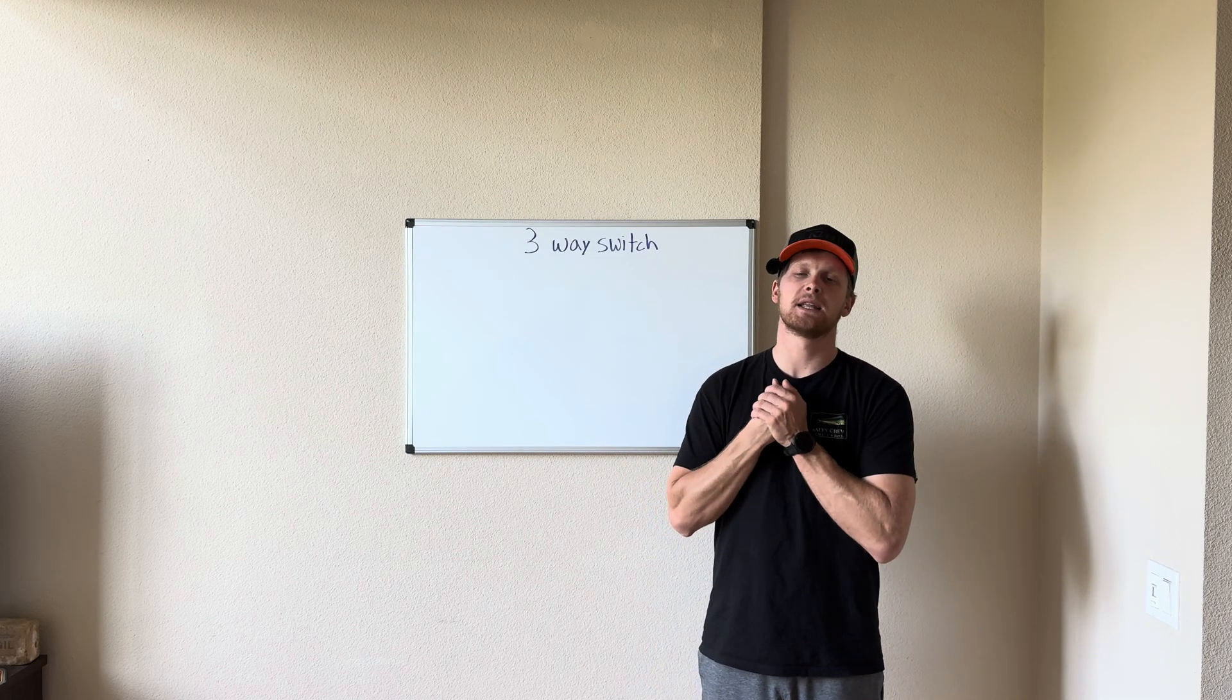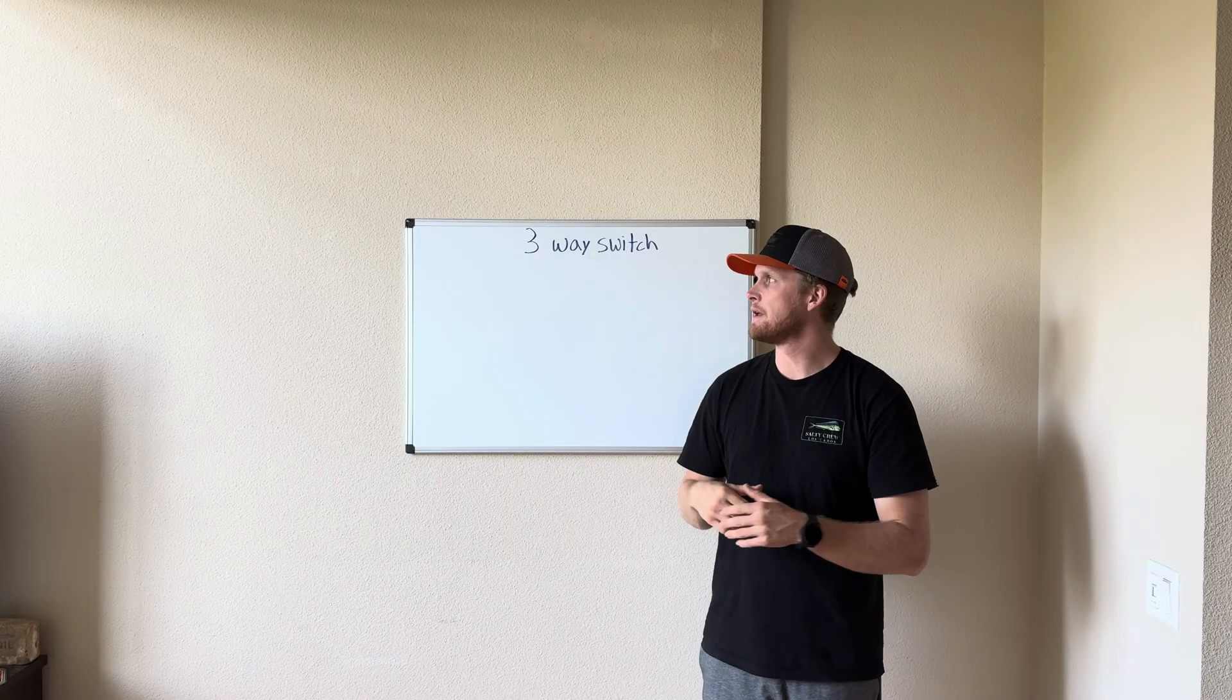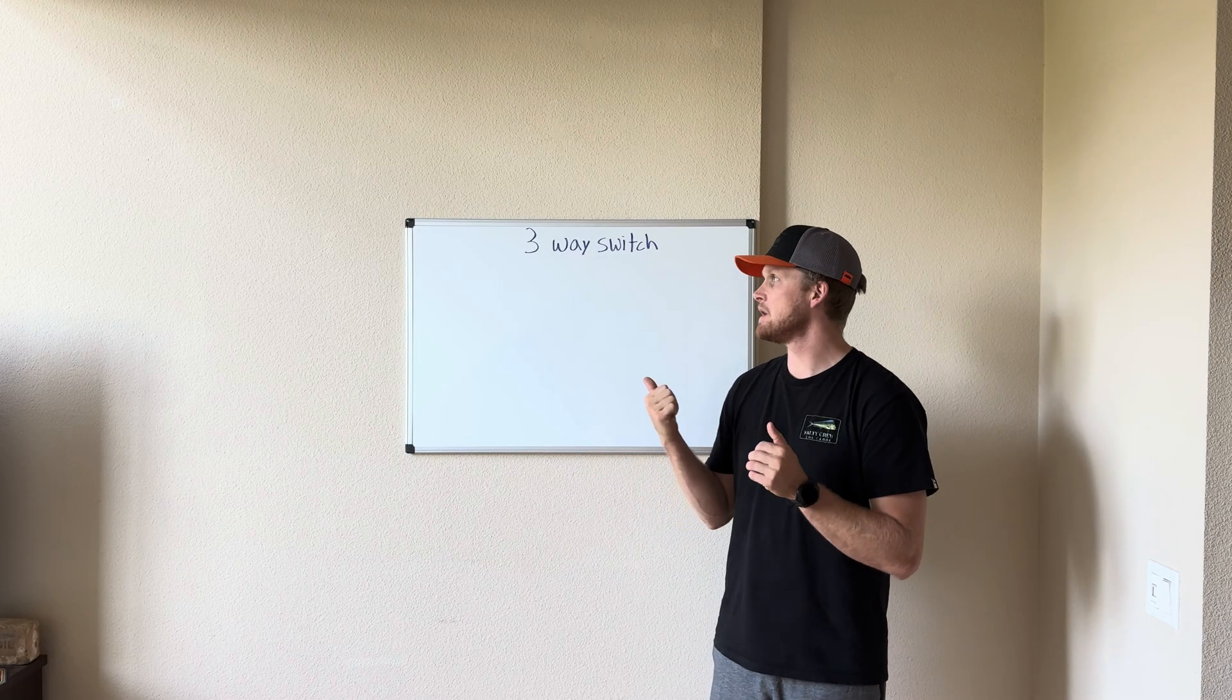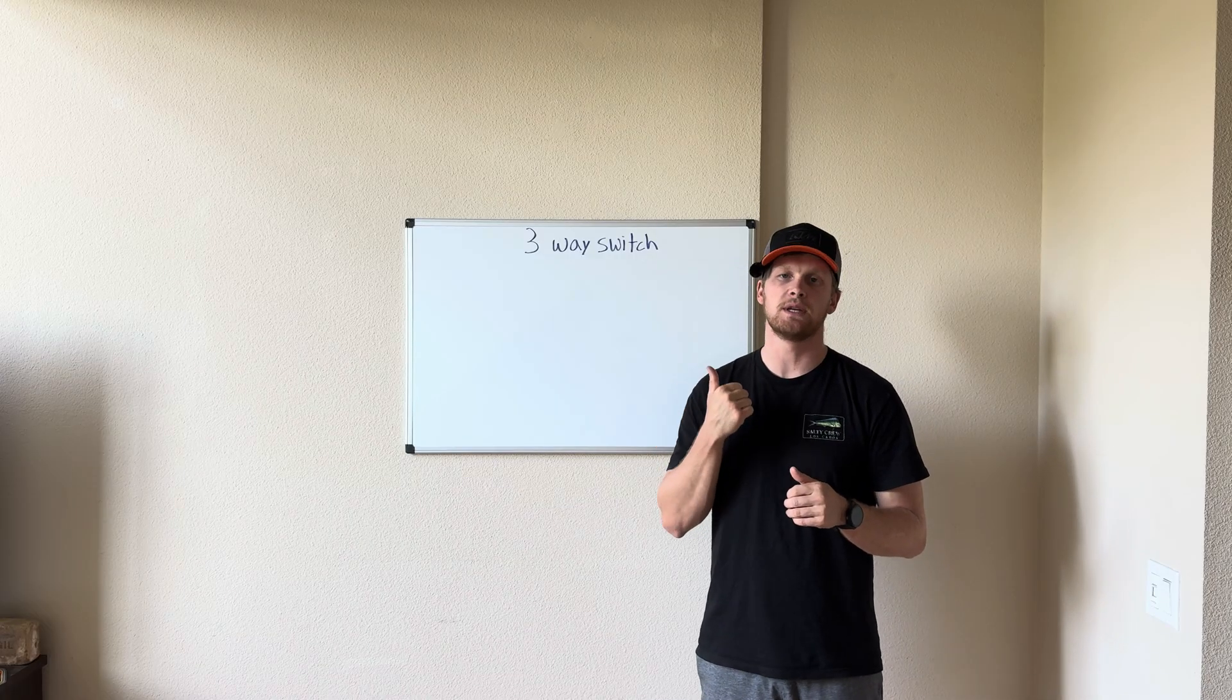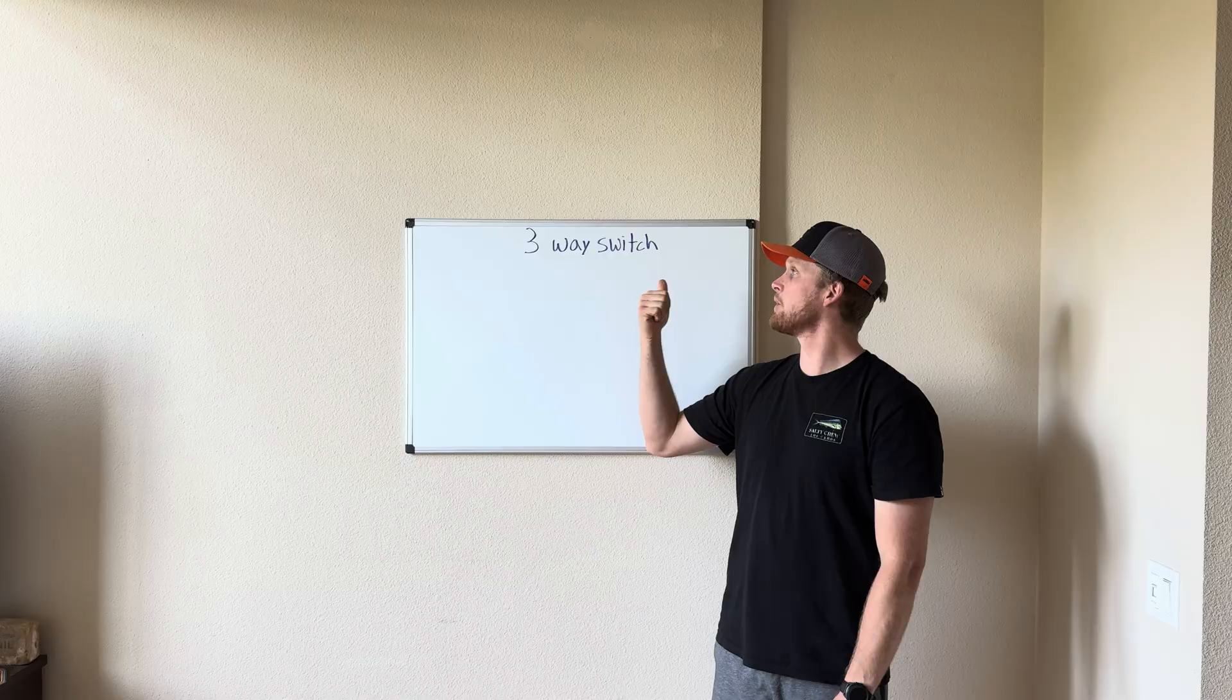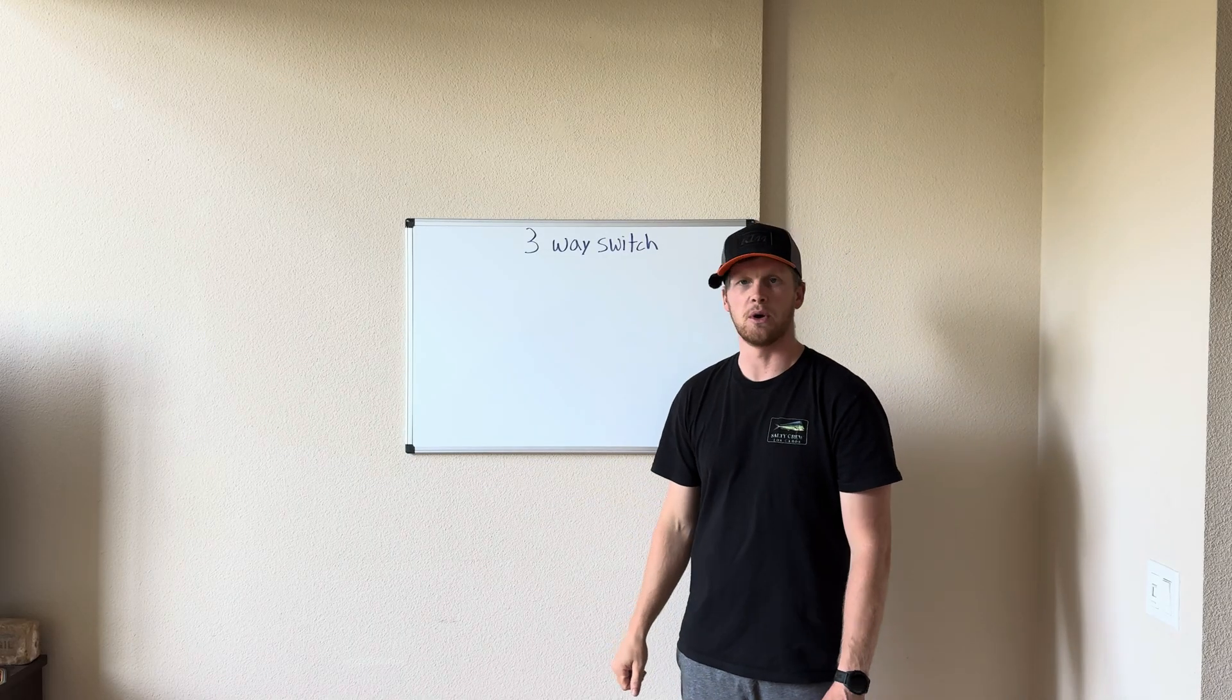What is going on everybody and welcome back to The Electrician's Broom. Where's the wall? So we've done a ton of videos on what things actually look like when they're installed in a wall or in a ceiling. What we haven't done is really dug into what the circuitry is actually doing with those particular installs. So today starting with a three-way switch we're going to draw it on a whiteboard, go over the circuitry, let's jump into it.